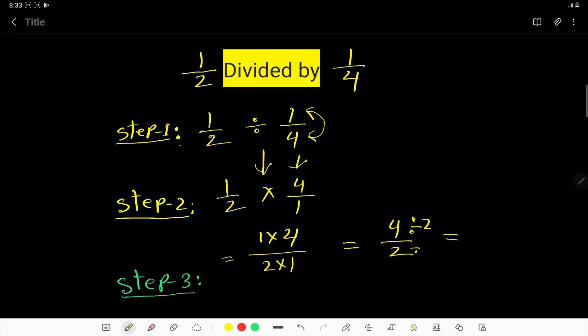So now you can reduce this fraction. If you divide this 4 by 2 and this 2 by 2, then you are getting 2 over 1, that is 2. 2 is the answer.